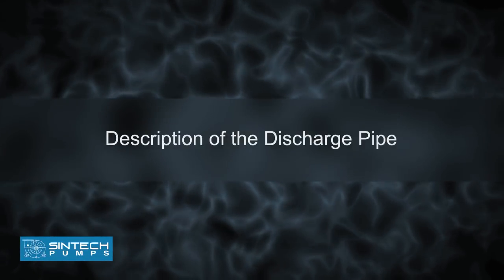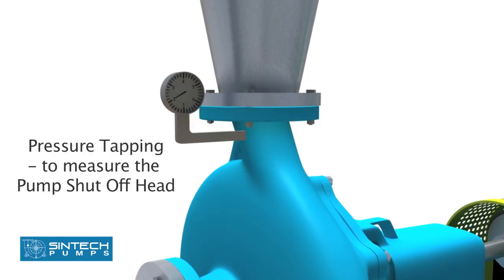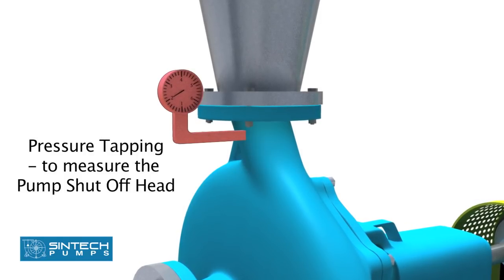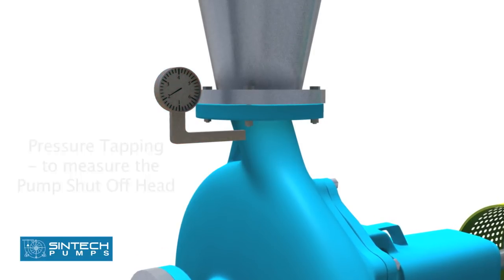Description of the discharge pipe. There should be a pressure tapping as close to the pump outlet and before the isolation valve as possible to measure the pump shut off head.